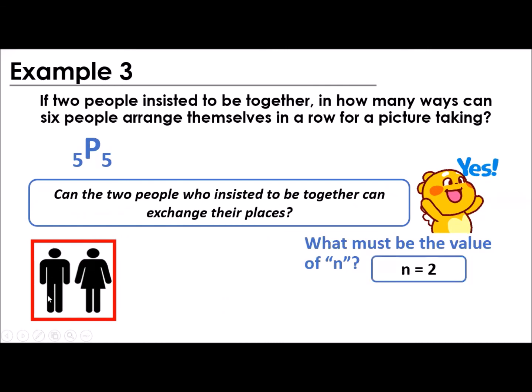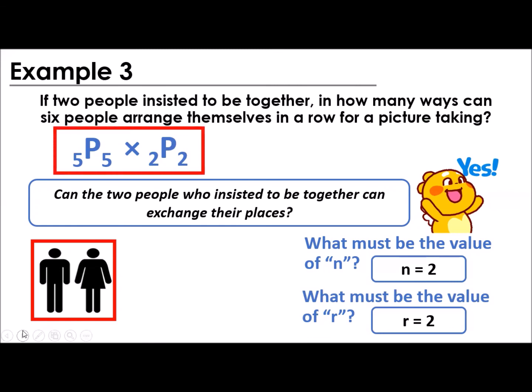What must be the value of n if we are pertaining now to these 2 people who insisted to be together? The answer there is 2, because there are only 2 of them. Right? Next, what is the value of r? Very good. So that is also 2. So it doesn't end with permutation of 5 taken by 5. Because we have a restriction that 2 people insisted to be together. So the common operation here is multiplication. You just multiply it. So you'll add this permutation of 2 taken by 2 because of the 2 people insisted to be together. So that's the time that we're going to solve for that.